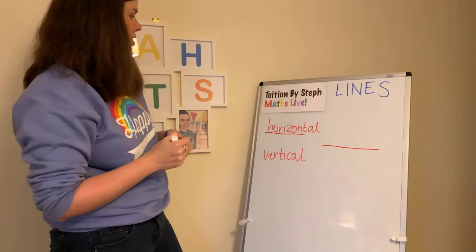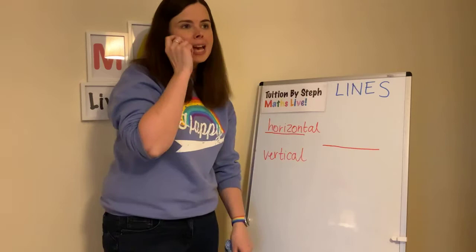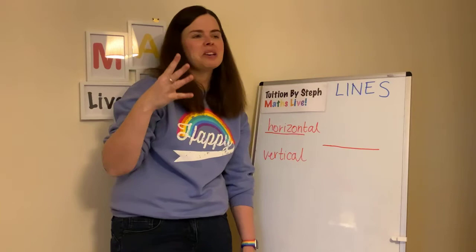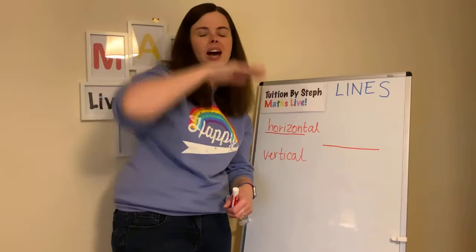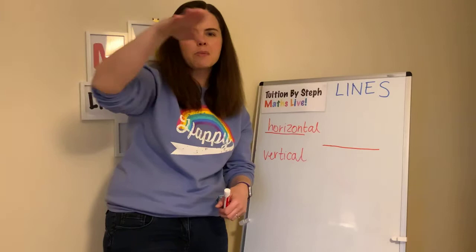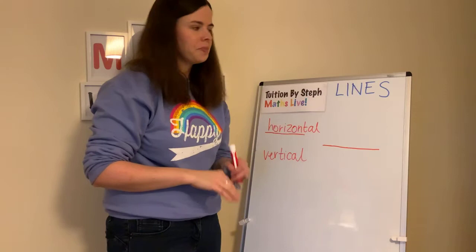The word horizon is in horizontal. The horizon is where the sun rises and sets — any direction where the earth becomes the sky. It pretty much always looks flat unless there's a mountain in the way. Horizontal.